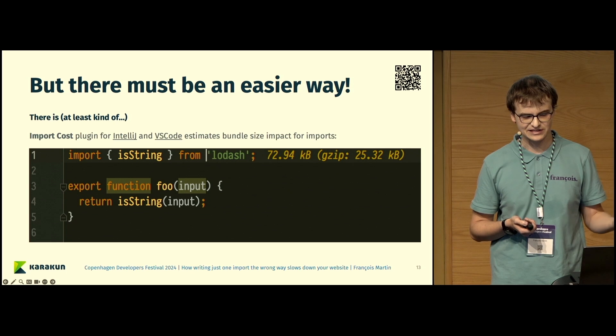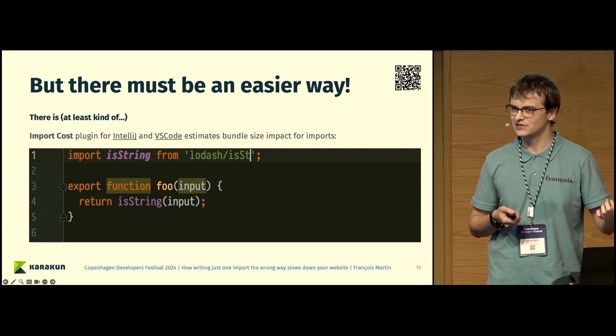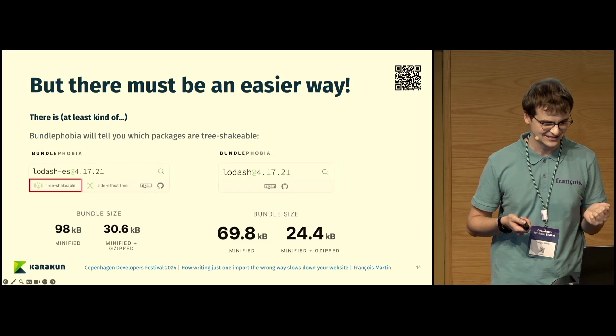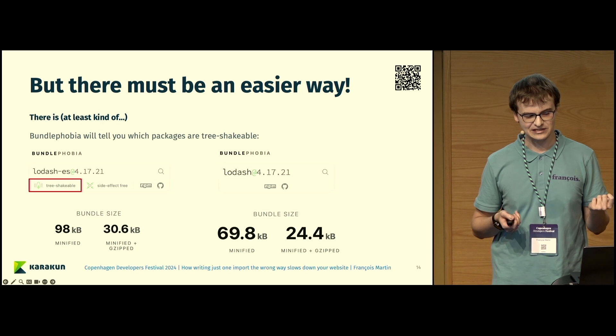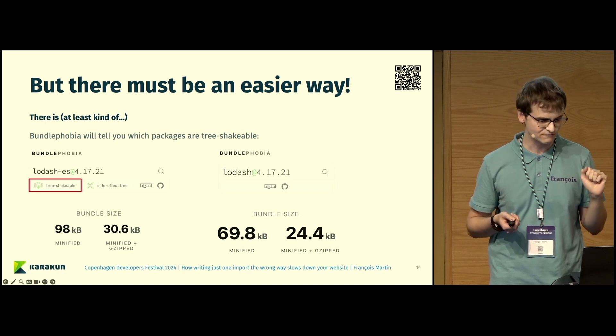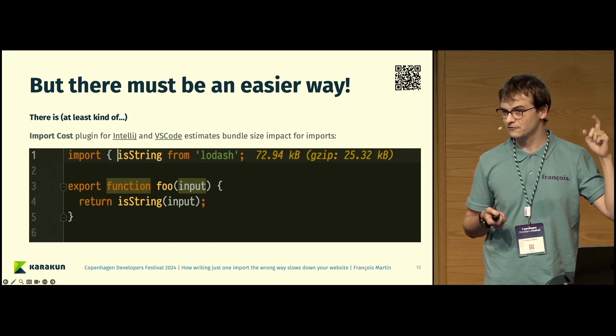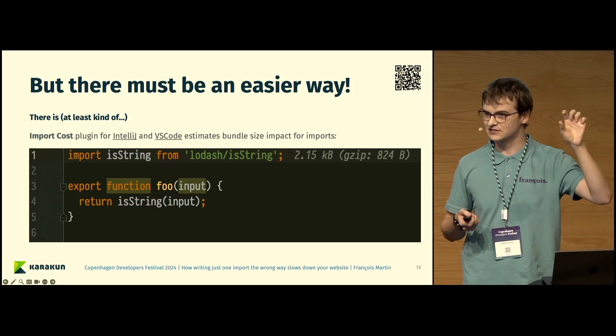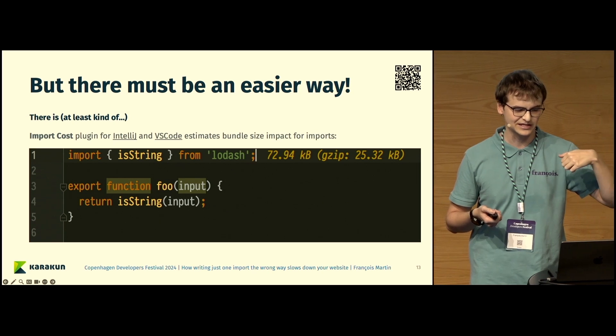The only part this plugin doesn't help you with is if you notice, for example, that the bundle size impact is much bigger than you expect. It doesn't tell you how to change that, but now that you've visited this talk, you know. Another option is you can use Bundle Phobia, and this will tell you which packages are tree-shakeable. You can see it by this tree-shakeable annotation here. By the way, you can see IntelliJ and VS Code is underlined. If you grab the slides, remember to scan the QR code, you can click on the IntelliJ and VS Code underlined things, and then you can actually download those plugins if you want to use them.